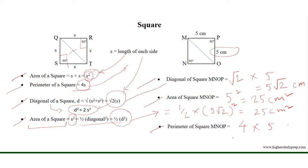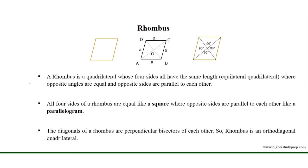The perimeter of this square equals 4 times the length of each side: 4 times 5 equals 20 cm. A rhombus is a quadrilateral whose four sides all have the same length, so a rhombus is an equilateral quadrilateral where opposite angles are equal.